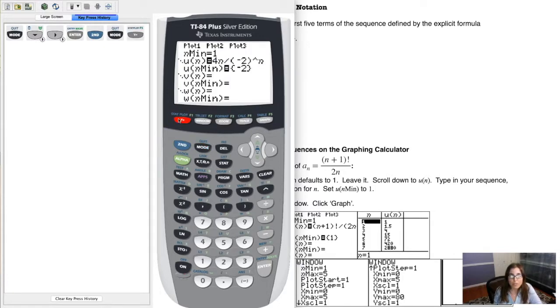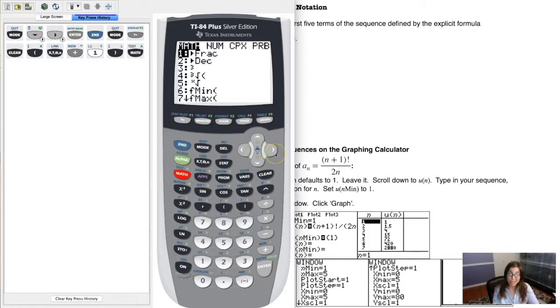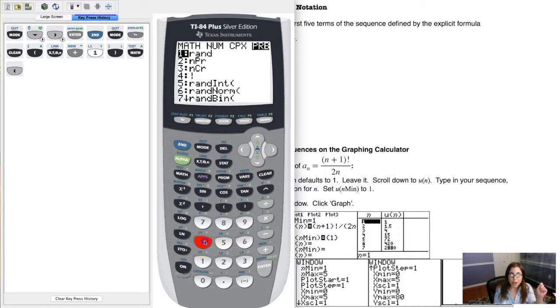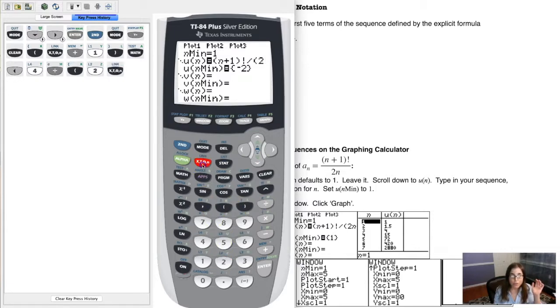And go back to my home screen. Now I'll go to my y equals. And we always want to leave our n min at one, because usually we are starting with the first term in our sequence. And my explicit formula, let me clear this out, I should have (n+1)!. So let me put that binomial in parentheses. If you'll recall, for our factorial, hit your math key. Either scroll right three times to PRB, or I'm actually just going to scroll left once and do option four.